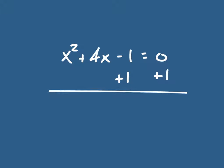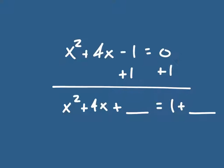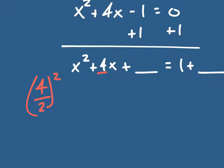I'm going to add one to both sides and get x squared plus 4x plus blank equals 1 plus blank. My whole objective is to turn this side into a perfect square trinomial. I do that by taking my middle term 4, dividing it by 2, and then squaring it. That simplifies to 2 squared, which is 4, so the 4 goes in both blanks.